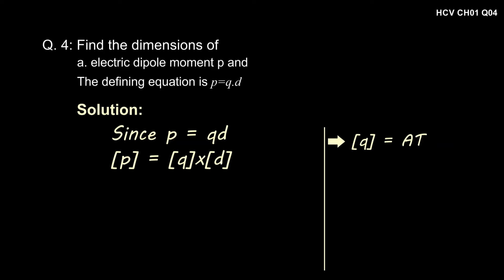Since P = Q × D and the dimension of Q is AT, the dimension of P must be the dimension of Q times the dimension of D, which is AT × L. As the dimension of Q is AT and the dimension of D is L, the dimension of P is ATL.